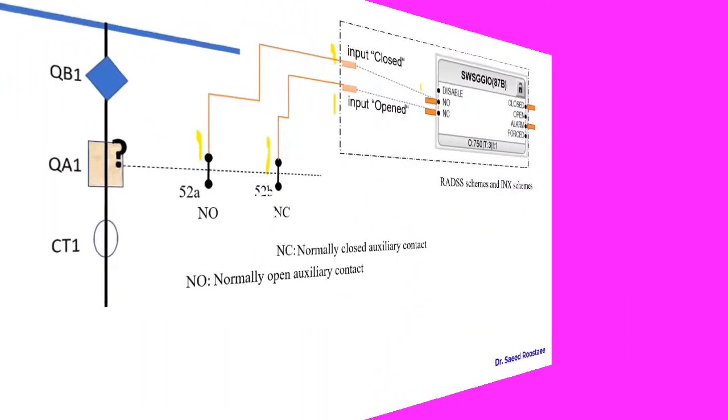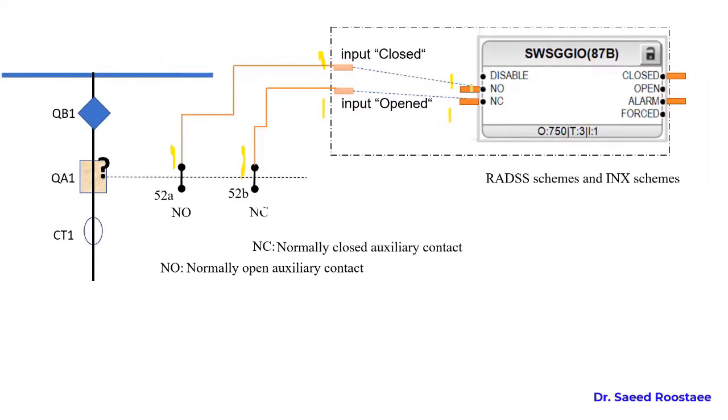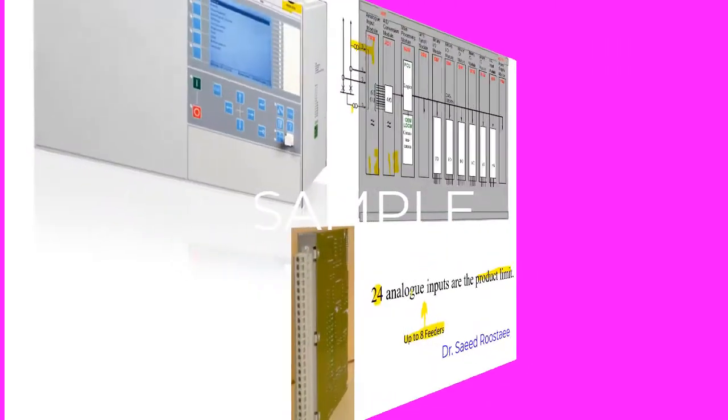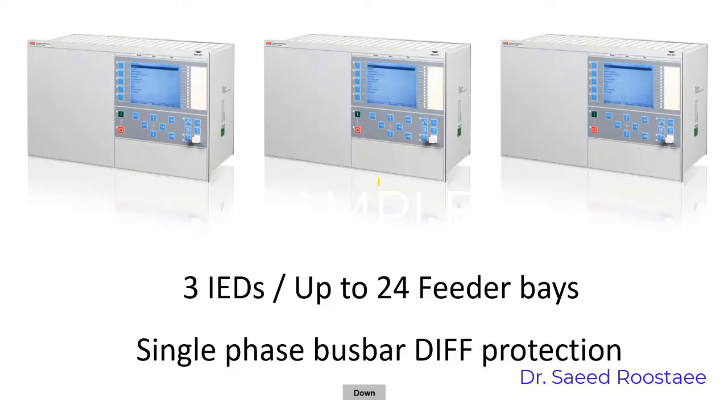In this case the position of the breaker is not clear and for both RADSS and INX scheme it shows the closed position, but with alarm after the T-alarm settings. Also the relay needs more than 24 analog inputs, but the relay limitation can cover only up to 24 analog inputs.